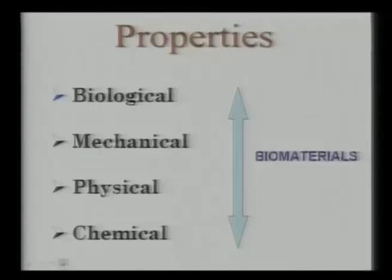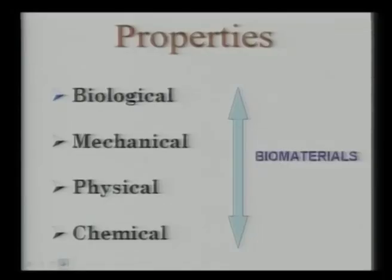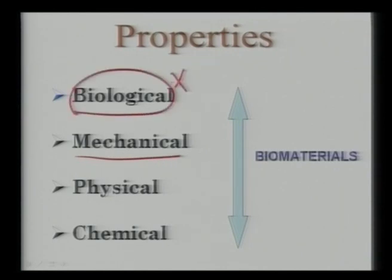What properties are required for biomaterials? The first and most important is biological properties — whether the material is bioactive, bioinert, or biodegradable in vitro or in vivo. Then comes mechanical properties. In conventional material science for structural applications, mechanical properties are often the primary optimization target. But for biomaterials applications, biological properties must first be evaluated to a satisfactory level.